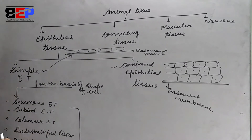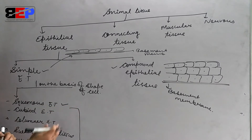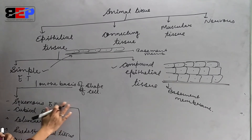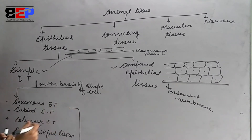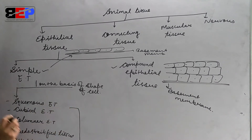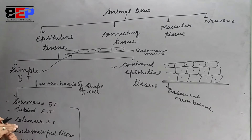The first type is squamous epithelial tissue. In squamous epithelial tissue, a single layer of flat cells is present with no intercellular space between them.